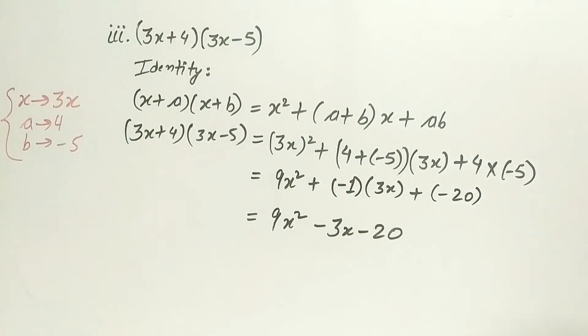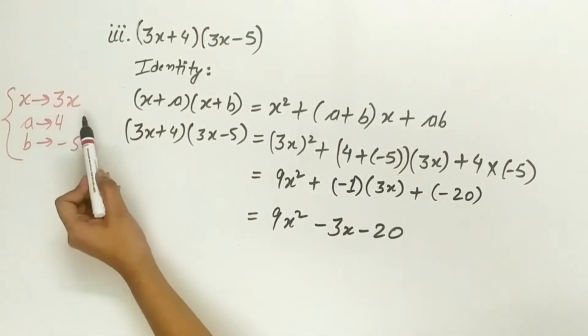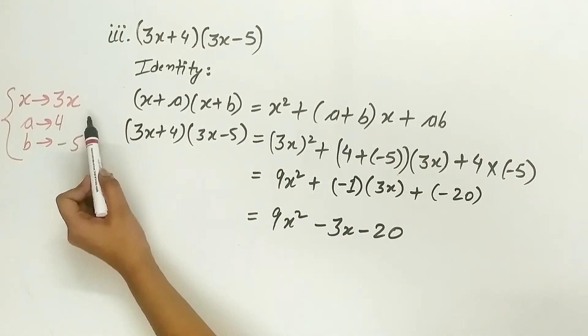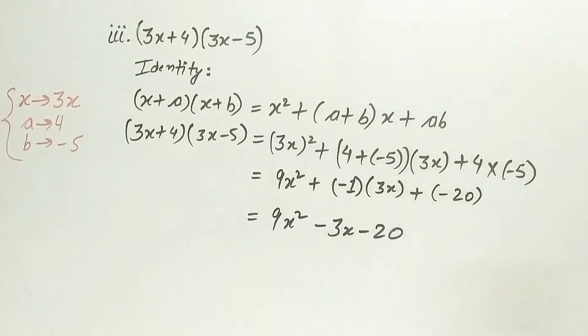Note: in this part, x is 3x, not x. a is 4 and b is minus 5.